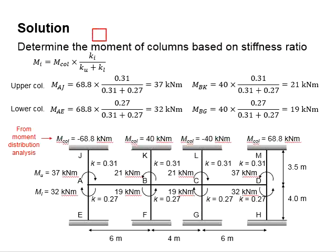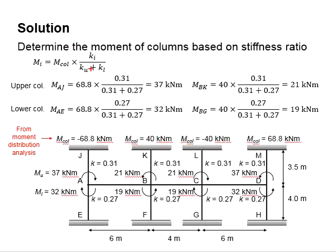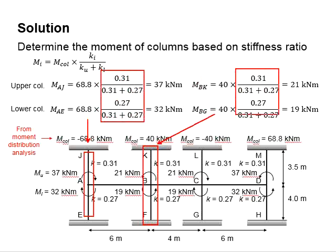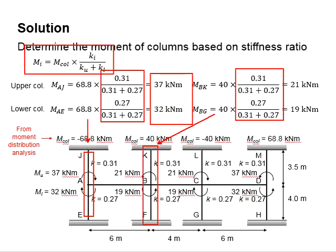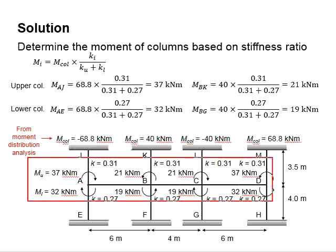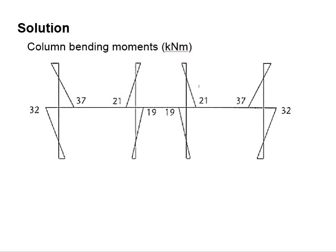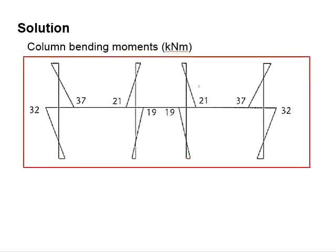Next, determine the moment acting in the upper and lower columns using the same concept of stiffness ratio out of the total moment. The moment for the upper and lower columns is determined by multiplying the respective stiffness divided by the total stiffness of the entire column. Since the moments sustained by the upper and lower columns differ, using the stiffness ratio equations gives the respective values. The moments for the upper and lower columns are listed and can be represented by the bending moment diagram for the column.